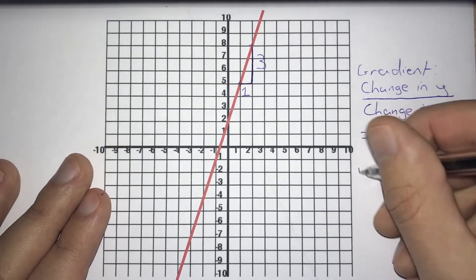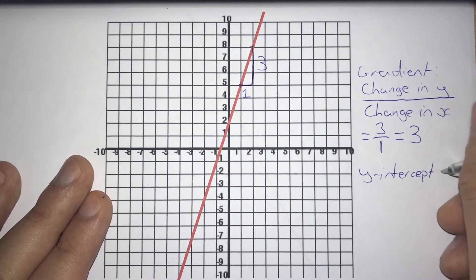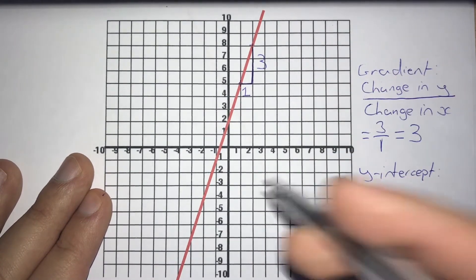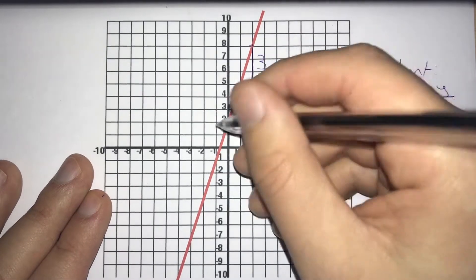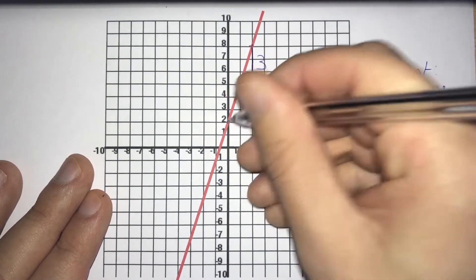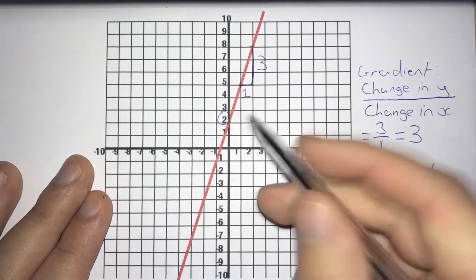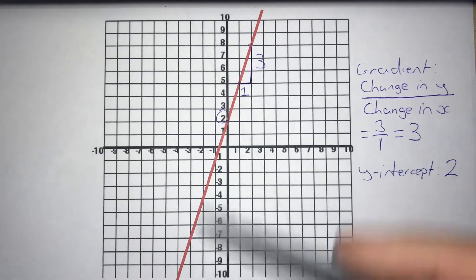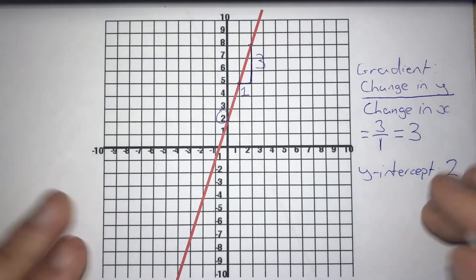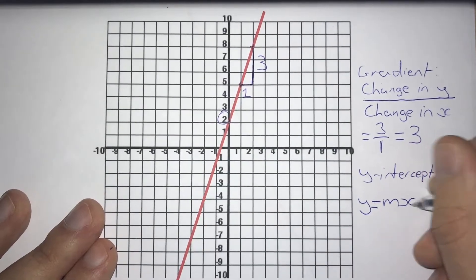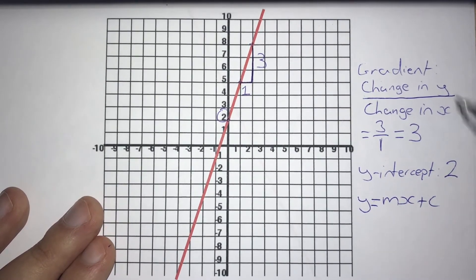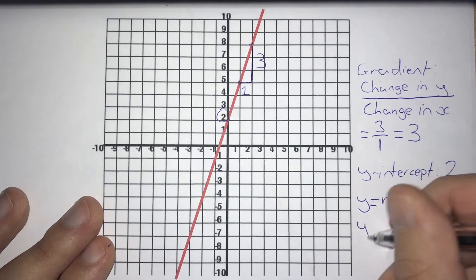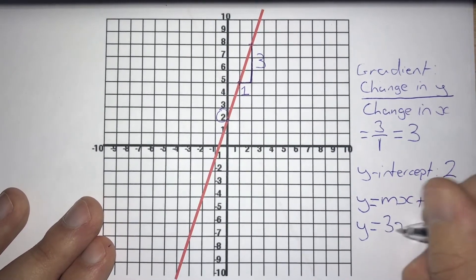Now for our y-intercept. Our y-intercept is simply where our graph crosses our y-axis. We see that this graph crosses our y-axis at the point where our y-value is equal to 2, so our y-intercept is just 2. Now we could write an equation for this graph using those two values and using the form y equals mx plus c, where m is our gradient and c is our y-intercept. So for this graph, we'd have y equals 3x plus 2.